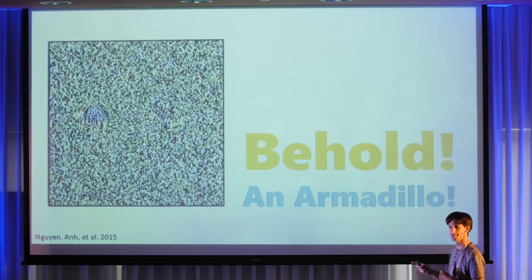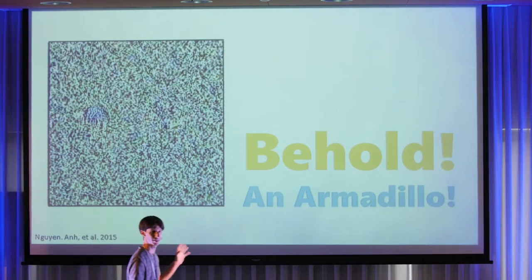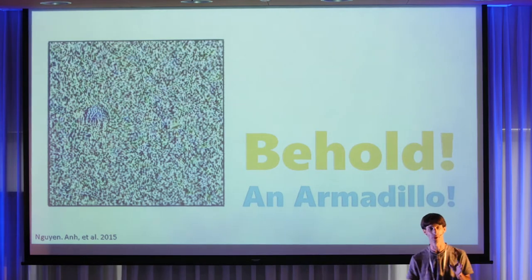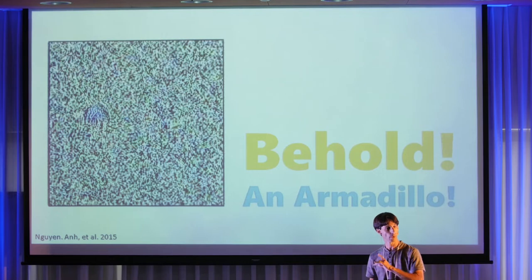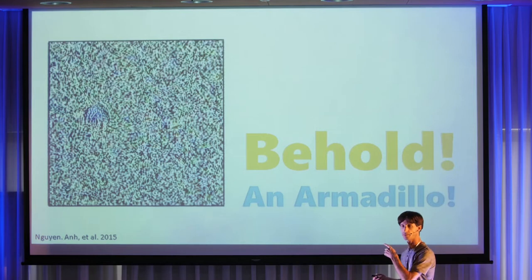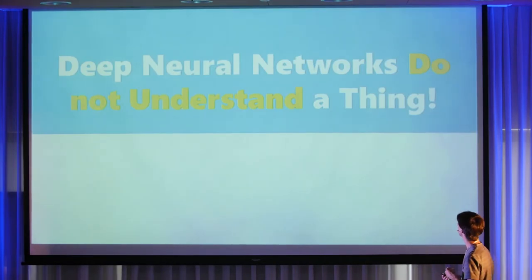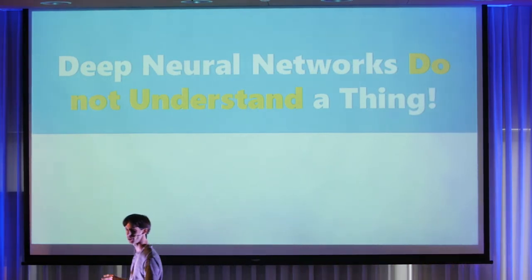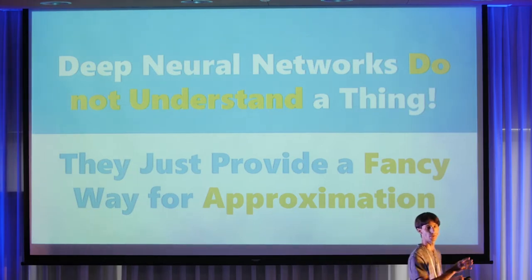I personally like this one — an armadillo, classified at 99.9-something percent certainty. The reason I prefer this over the panda example is that it tells us something deeper about neural networks. Here we started with a blank image, not a panda. And what this tells me is that deep neural networks do not understand a thing. Deep neural networks are just new and fancy ways to create approximations — not that different from random forests, boosting, or SVMs we used in the past.